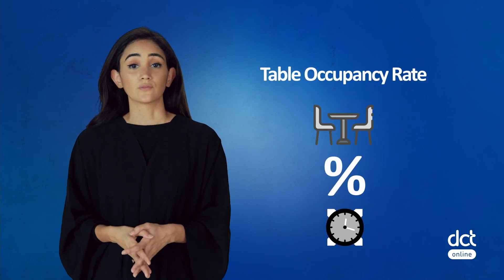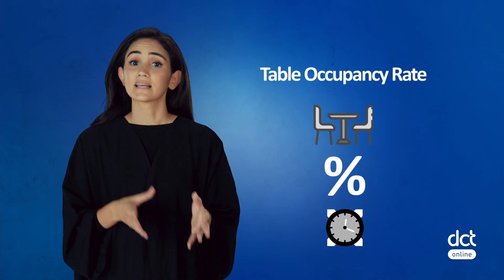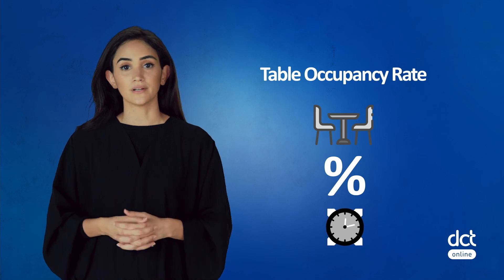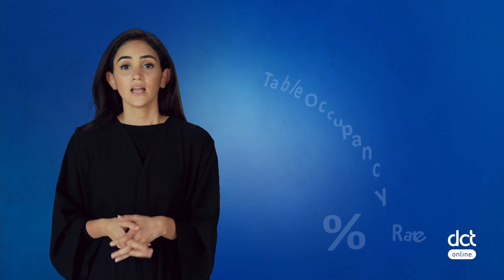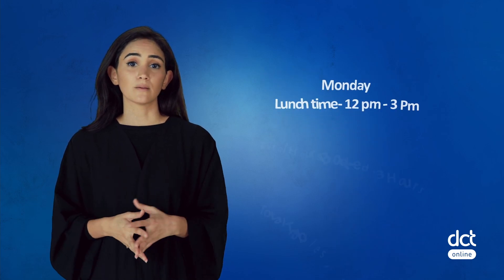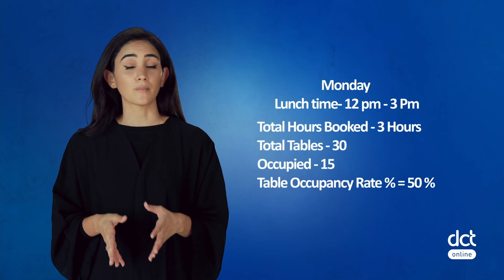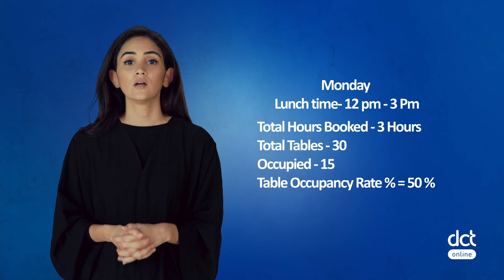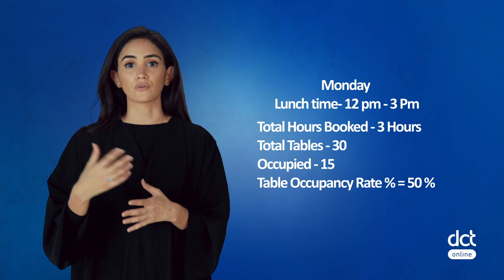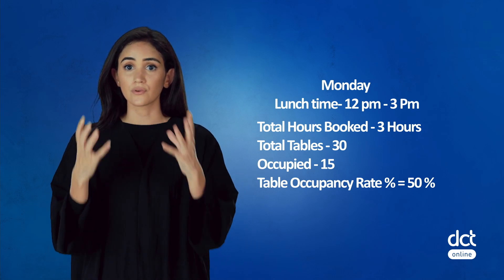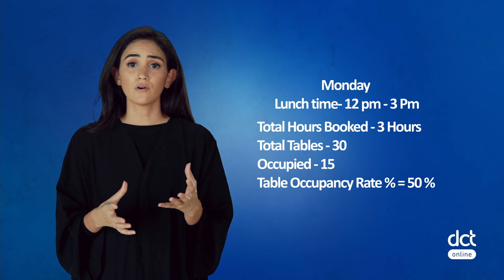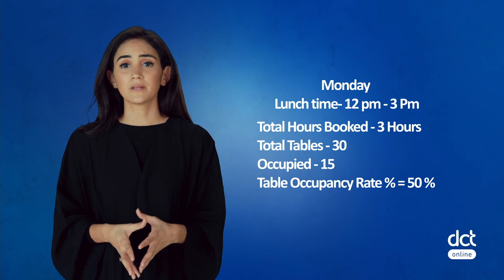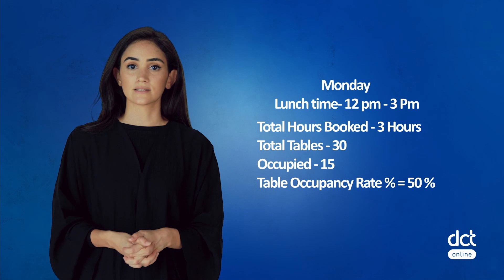Table occupancy rate refers to the percentage of tables which are occupied in any given period. If there are 30 tables in a restaurant and 15 of them are occupied for lunch on Monday, which runs from 12 pm to 3 pm — those 3 hours — then our table occupancy rate percentage for this period would be 50 percent.